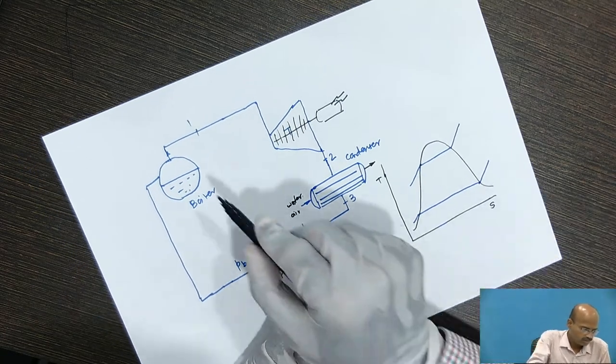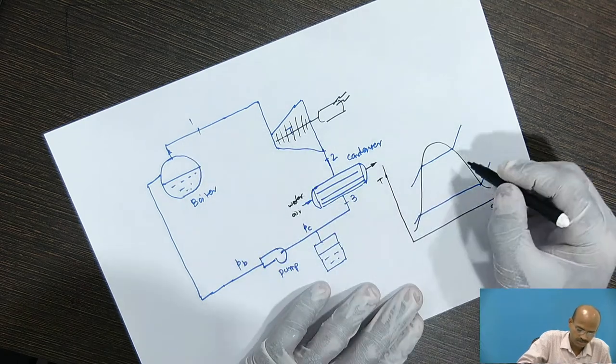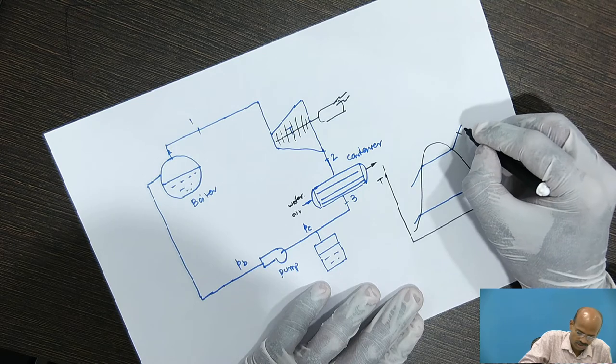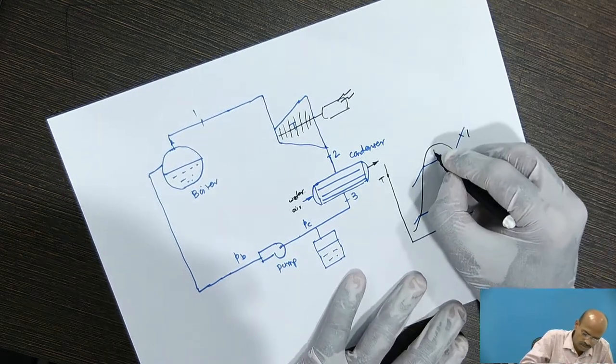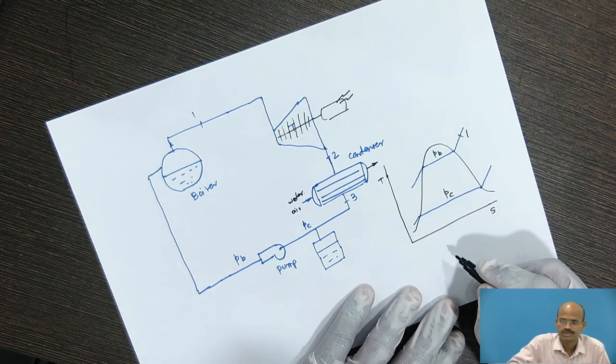Now, the boiler is generating steam at high pressure, high temperature. And suppose it is superheated. So, consider point number 1 is here. This is the boiler pressure, isobaric line. This is the condenser pressure, low pressure line.